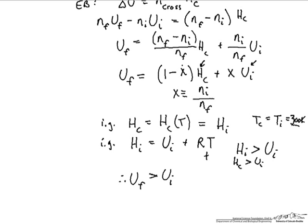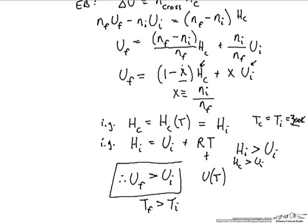We can verify this for any arbitrary value of x as long as it's a fraction: if h_c is greater than u_i, then u_f — being a weighted average of h_c and u_i weighted by the ratio of initial to final moles — will also be greater than u_i. Since the internal energy of an ideal gas increases as temperature increases, the final temperature must also be greater than the initial temperature.